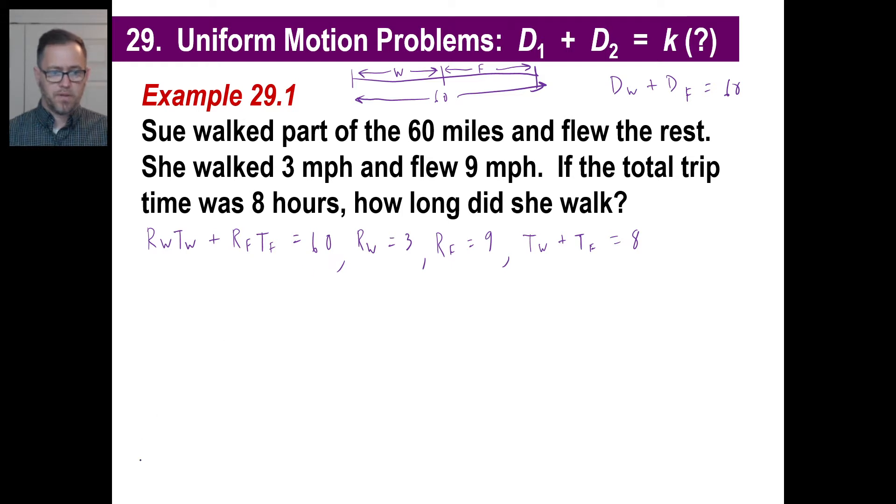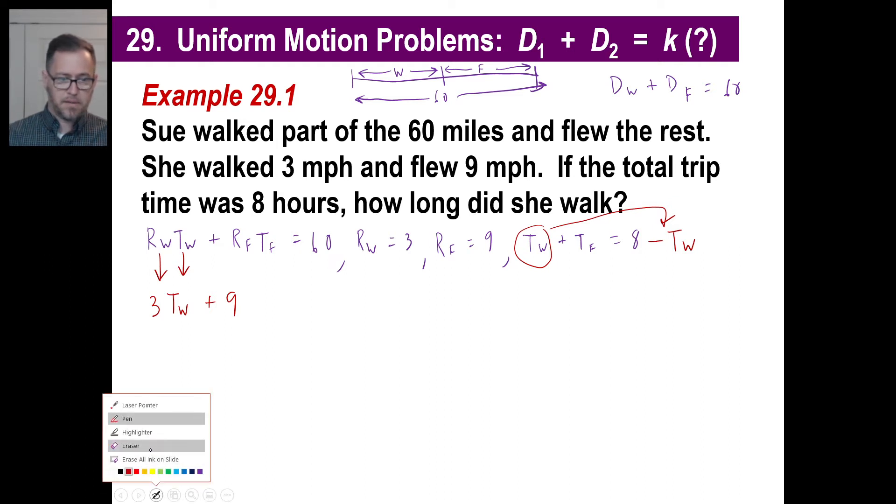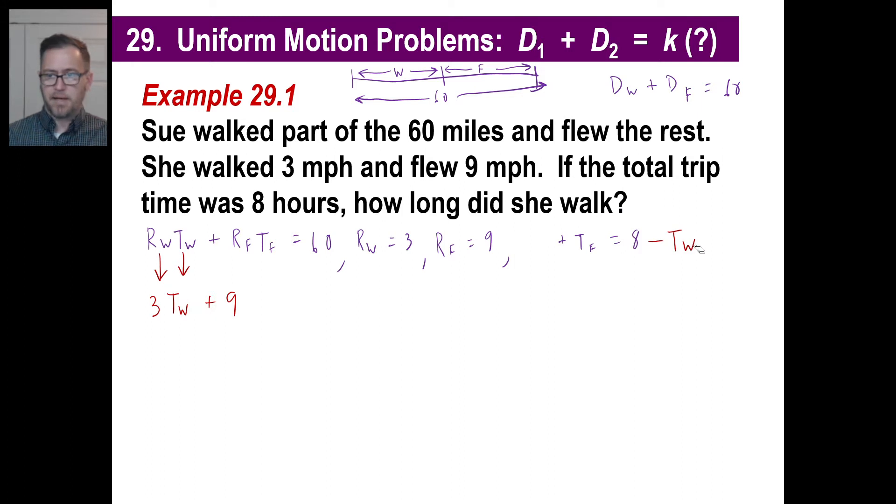Now all we need to do is take this big old honking equation on the left and throw a bunch of stuff into it and figure out what it is. The rate of walking was three. The time of walking we don't quite know yet, we'll just call it time of walking, plus the rate of flying is nine. Now the time of flying, we can't stick in t sub f there. We can't solve an equation with two unknowns. So let's stick in something for t of f. Let's solve for t of f. T sub f is equal to eight minus t sub w. That's what I'm going to plop in there. So instead of writing t sub f, I'll write eight minus t sub w. That equals 60.